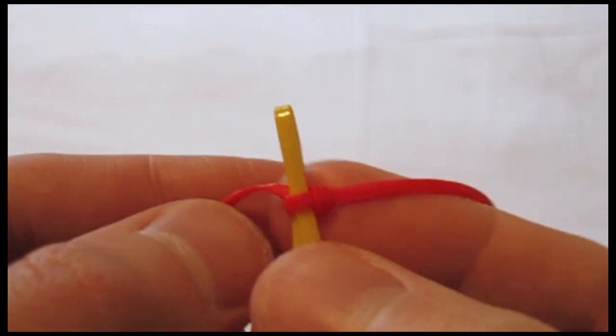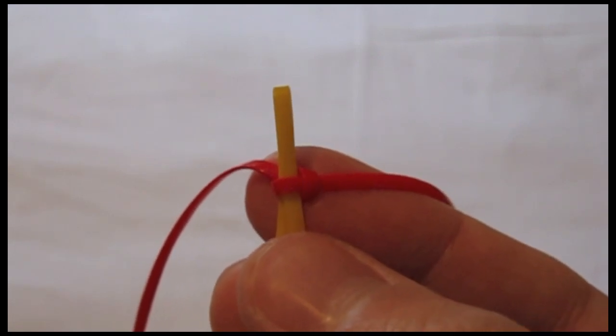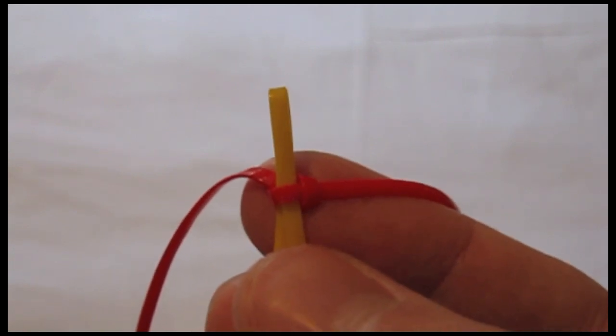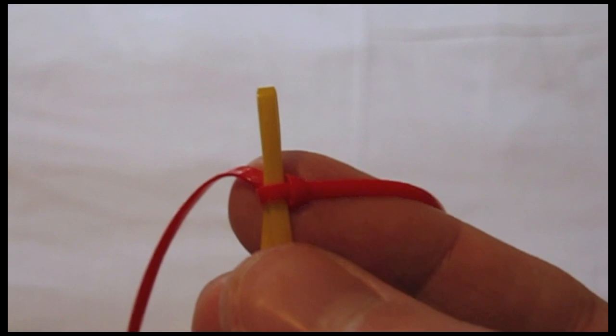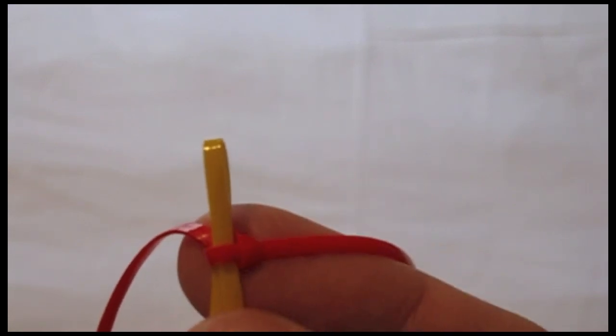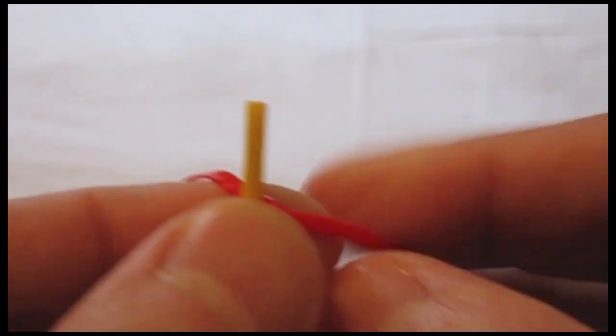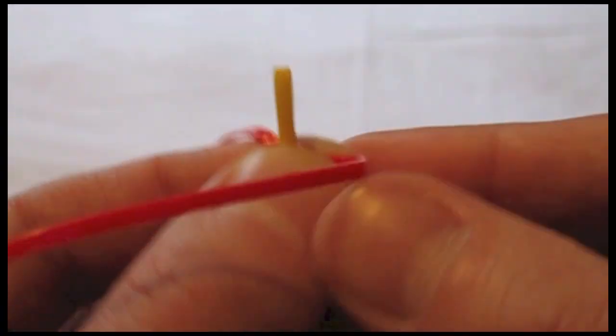We started the first stitch by bringing the strand on the left over to the right. To prevent the cobra from twisting, we need to alternate every stitch between starting on the left and starting on the right. So we'll start our second stitch with the strand on the right and bring it over to the left.